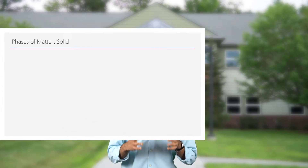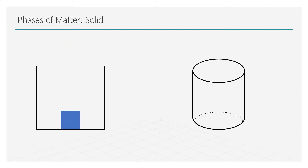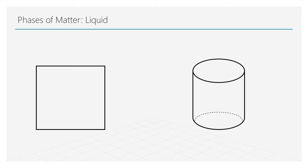In nature, matter exists in three different phases: solids, liquids, and gases. In solids, the atoms are tightly packed into a dense structure. As the atoms in solids are arranged in a regular manner, solids retain their shape and volume. The atoms and molecules in a liquid are not arranged regularly, and a liquid takes the shape of the container to which it is confined.